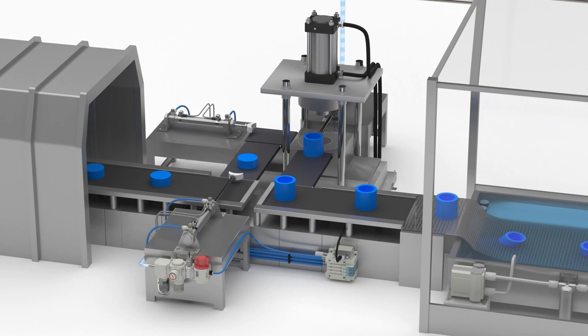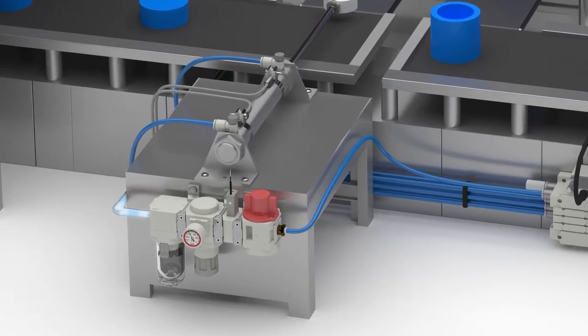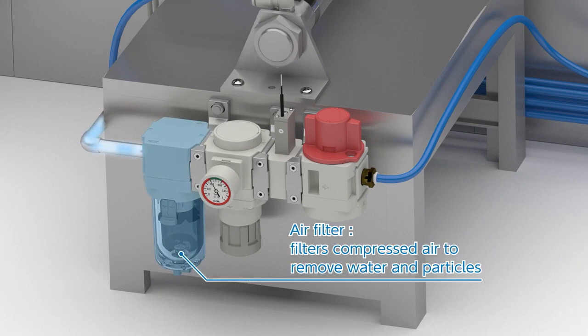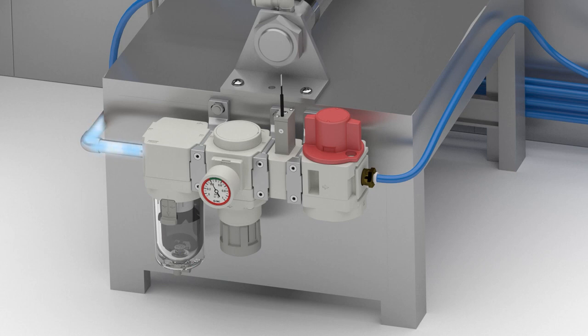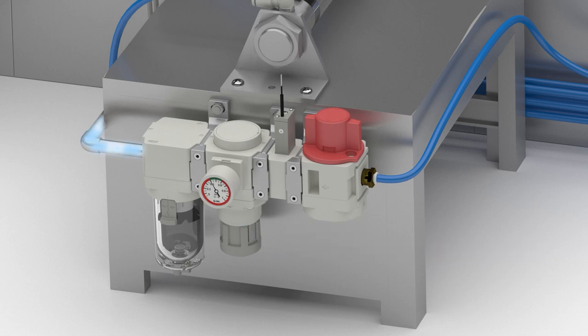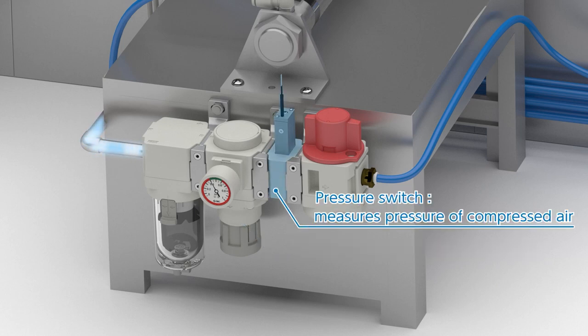The compressed air needs to be further processed for each application on a production line. It is first passed through a fine air filter to improve the purity of the air. The pressure of the air is then controlled by a regulator. And this pressure is then measured and monitored with the help of a pressure switch.